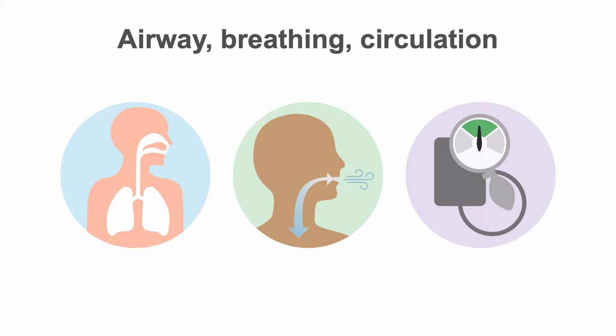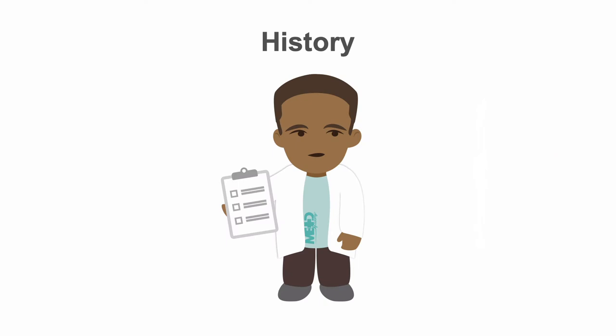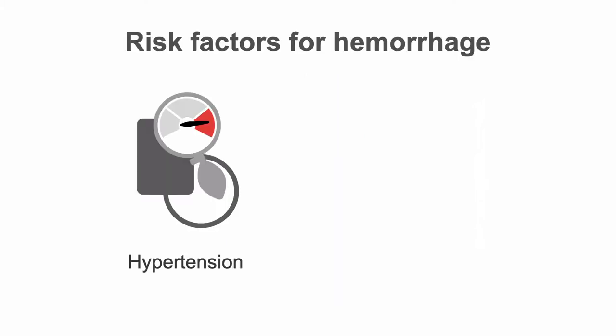In evaluating a patient for potential hemorrhagic stroke, always consider the patient's ABCs. Support ventilation and resuscitate as necessary. Then obtain an expedited history and neurological exam, paying attention to conditions that are associated with a higher risk of hemorrhage and of ischemic stroke.